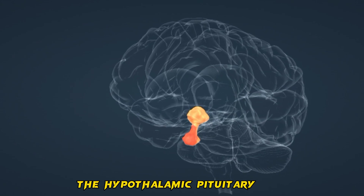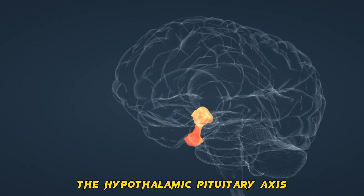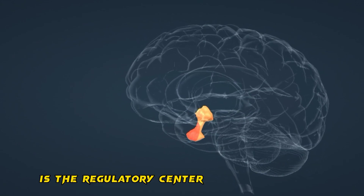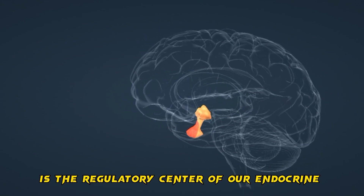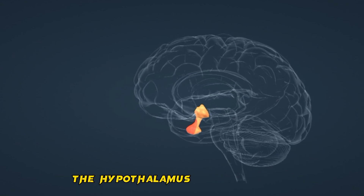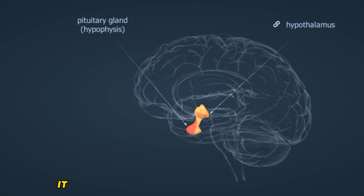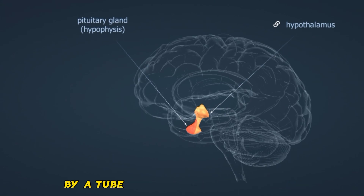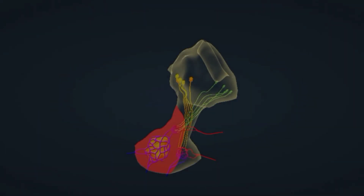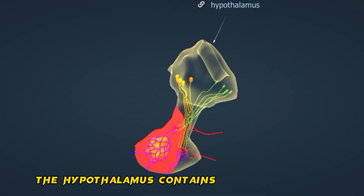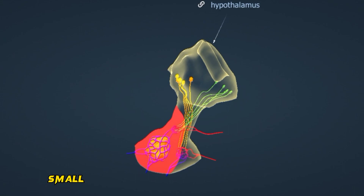The hypothalamic-pituitary axis is the regulatory center of our endocrine system. The hypothalamus is part of the diencephalon and is connected to the pituitary gland by a tube called the pituitary stalk. The hypothalamus contains neuroendocrine cells.